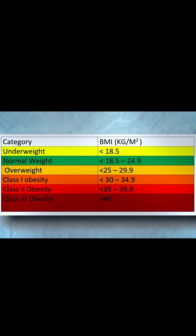The fourth category is people with a BMI between 30 and 34.9 — they are class 1 obesity.